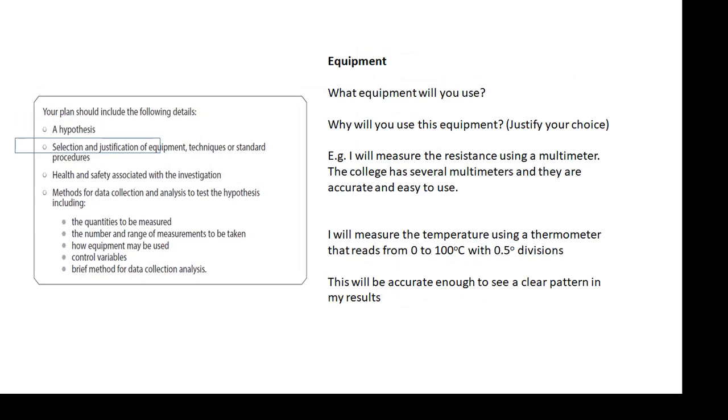Equipment. Now, selection and justification of equipment. So, what equipment will you use and why will you use it? You have to justify your choice. I will measure the resistance using a multimeter. Why? Because the college has several multimeters and they're very accurate, they're very easy to use. There are other ways of measuring resistance, but they'll take a lot longer. If you've got a good multimeter, then just use it. I will measure the temperature using a thermometer that reads from 0 to 100 degrees centigrade with 0.5 degree divisions. This will be accurate enough to see a clear pattern in my results. So, say what equipment you're going to use and justify it. Why? If there's a choice of equipment, say why you chose that one.